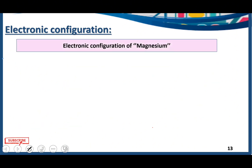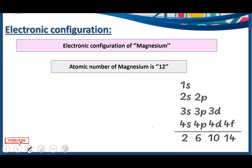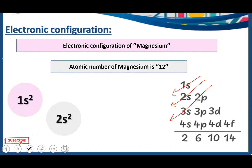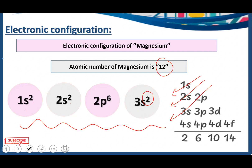Electronic configuration of magnesium — atomic number 12. We write 1s2, 2s2, 2p6, and 3s2. Counting the electrons: 2+2=4, 4+6=10, 10+2=12. So we are done accommodating 12 electrons. The electronic configuration of magnesium is 1s2, 2s2, 2p6, 3s2.